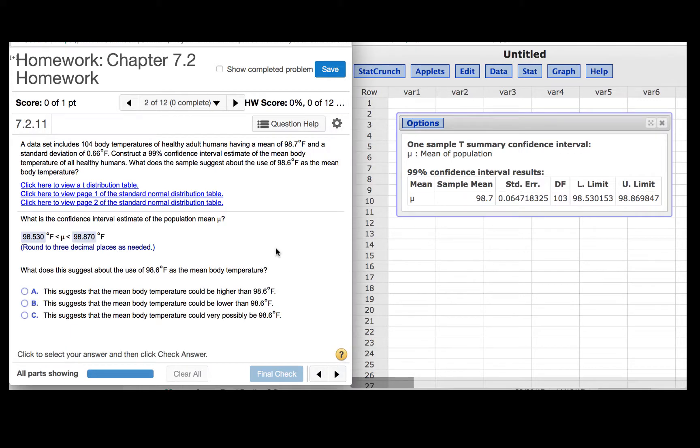What does this suggest about the use of 98.6 degrees Fahrenheit as the mean body temperature? Since our interval contains 98.6, our response should be that this suggests the mean body temperature could very possibly be 98.6 degrees Fahrenheit.